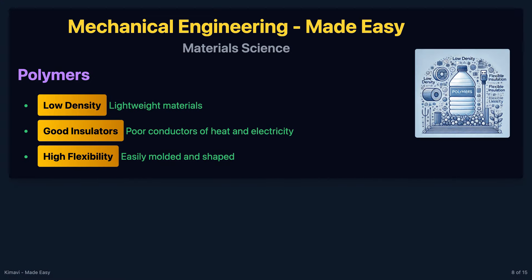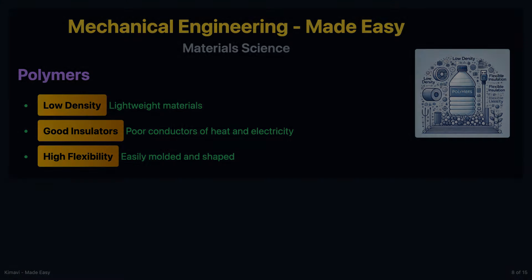Polymers are large molecules composed of repeating structural units called monomers. They can be natural, like rubber and cellulose, or synthetic, like polyethylene and nylon. Polymers are generally lighter than metals and ceramics, have low thermal and electrical conductivity, and can be easily molded into various shapes with good elasticity.